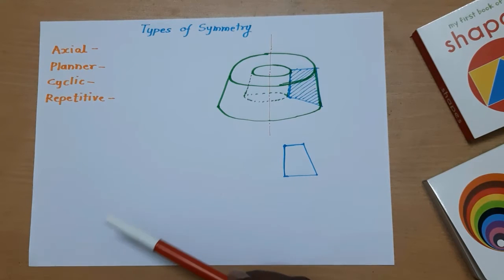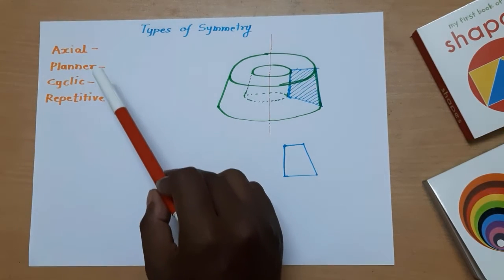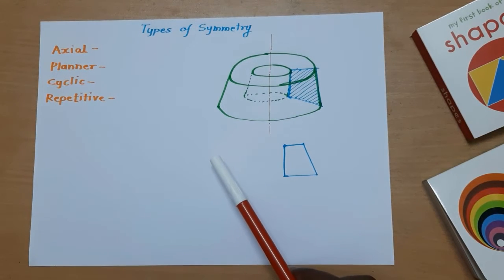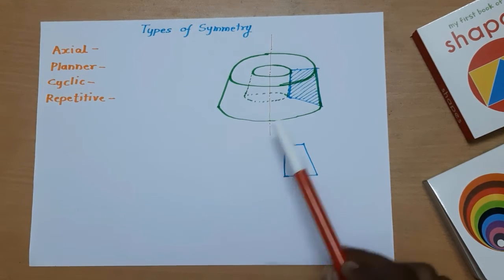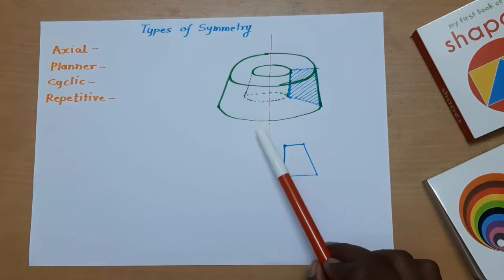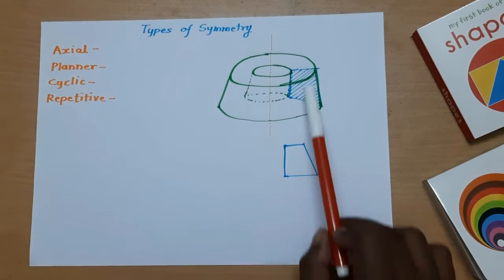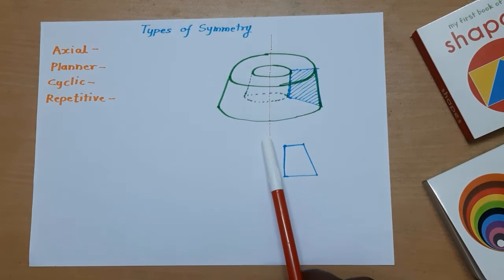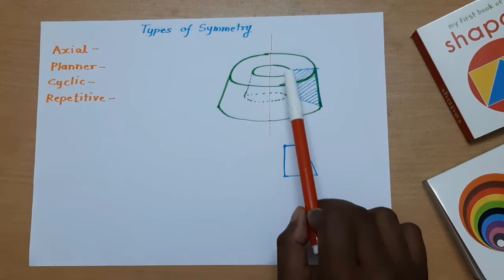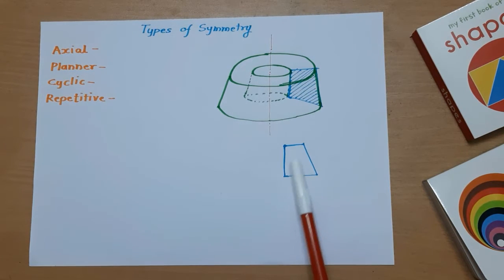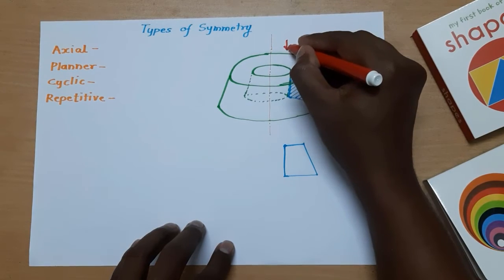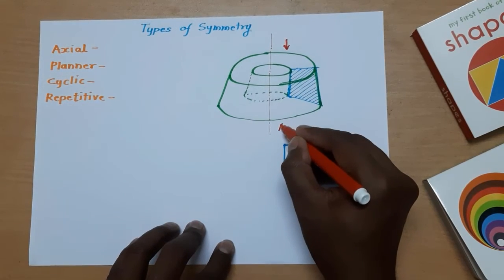There are four types of symmetry: axial, planar, cyclic, and repetitive. The first one is axial symmetry. Suppose there is one object which is symmetrical about one axis. Here is a conical shape of a cylinder and it is symmetric about this axis. When we cut the section here, we apply some pressure on one end and fix the other end.